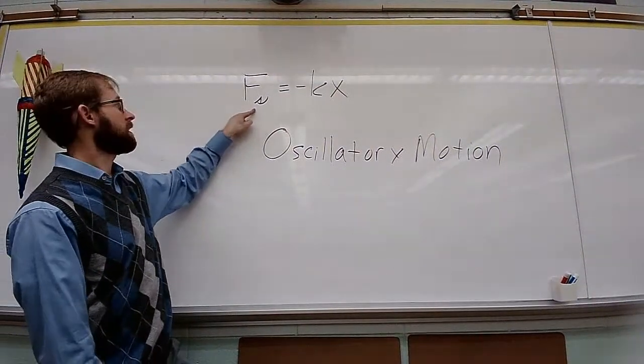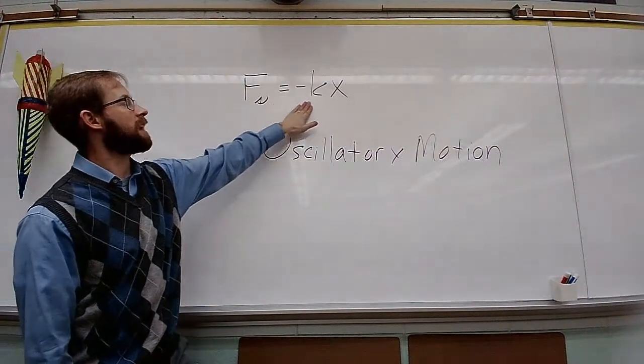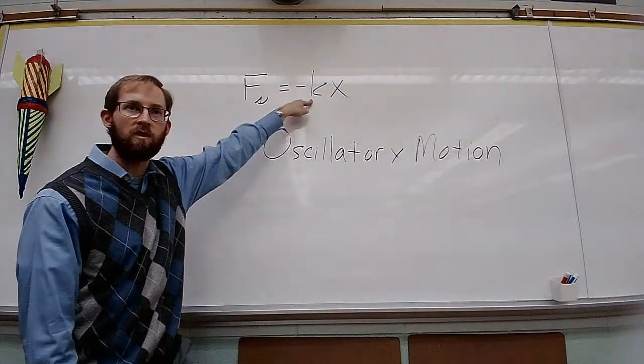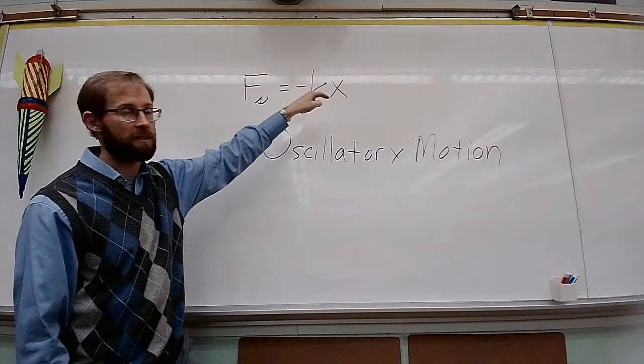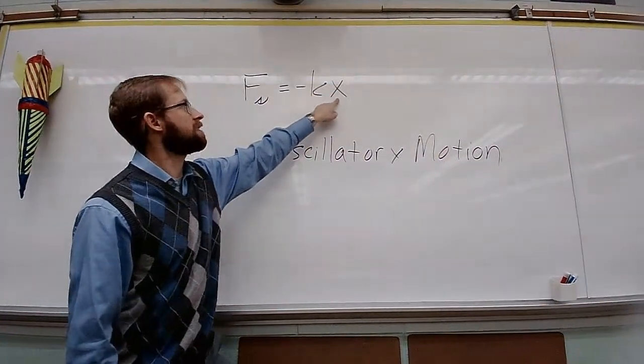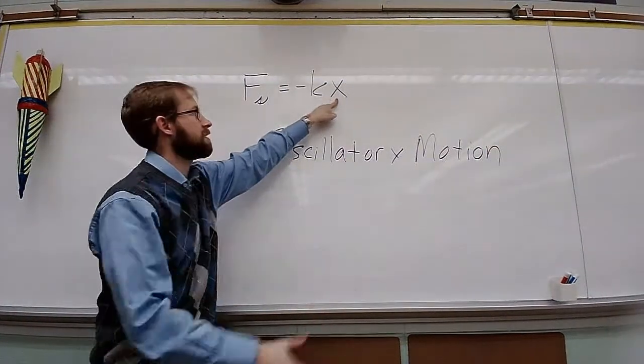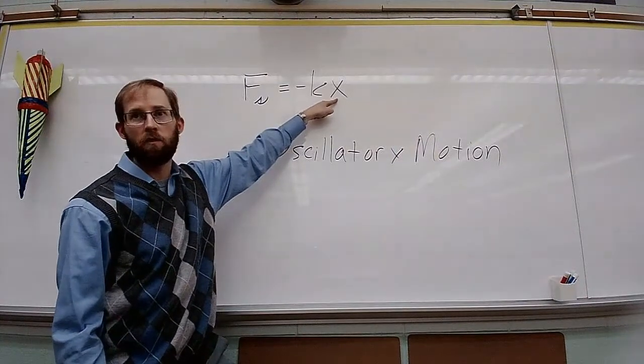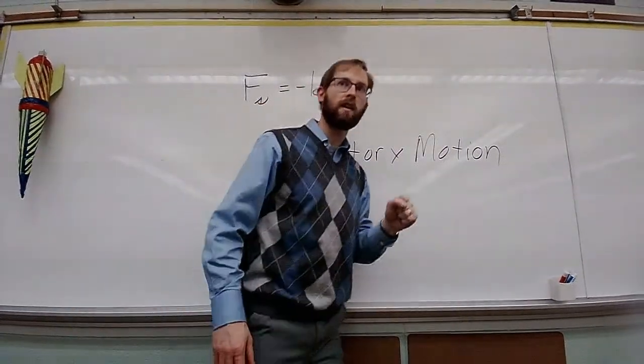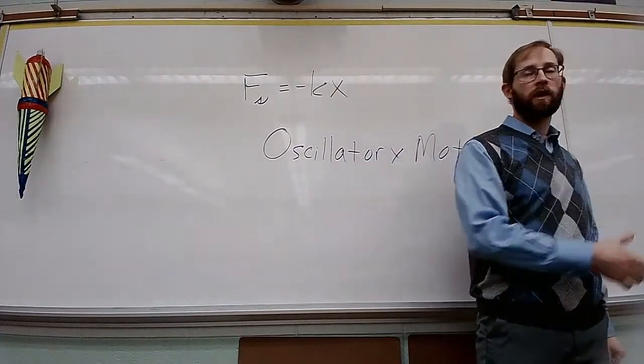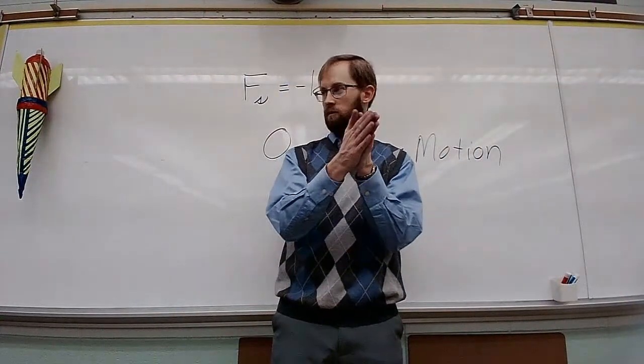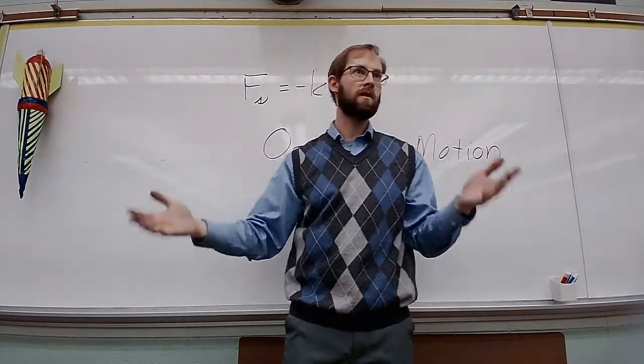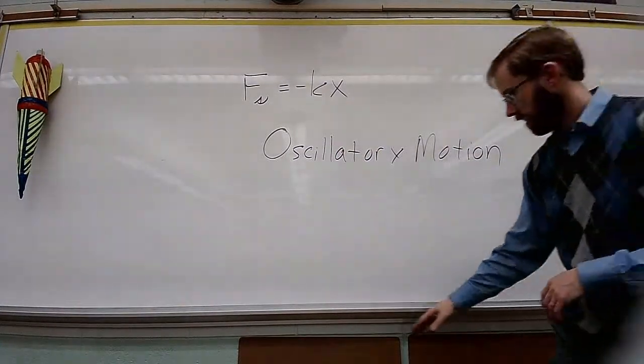So, Fs, that's the force of spring, or the spring force. That's going to be equal to negative kx. K is a constant, and your constant k is going to be basically how strong your spring is. It's in newtons per meter. X is the distance from your equilibrium point.